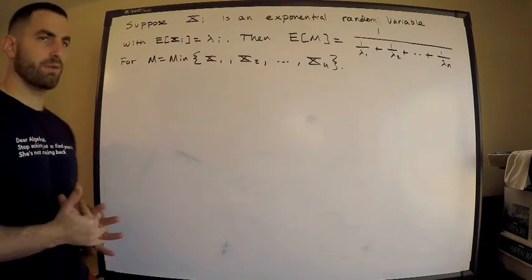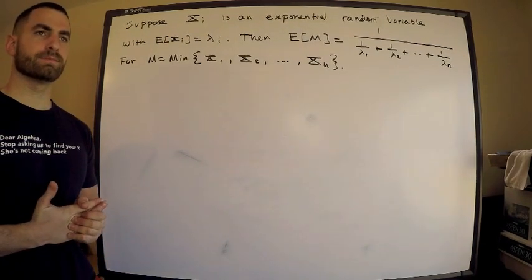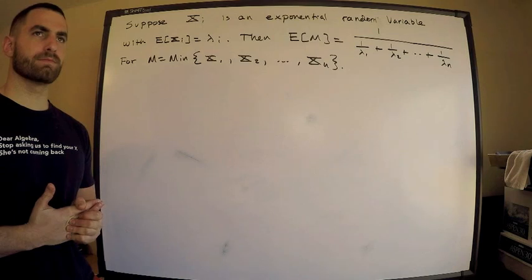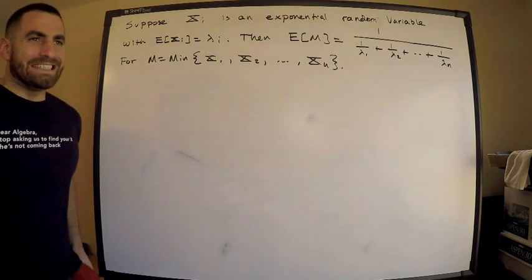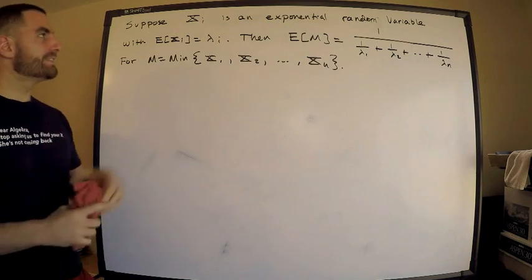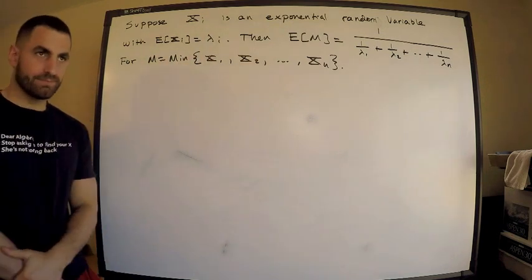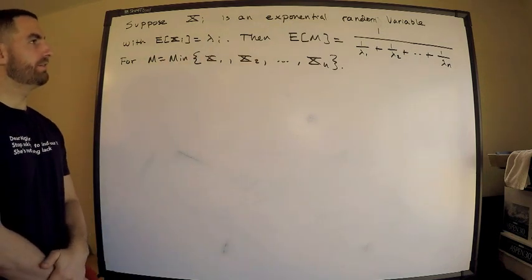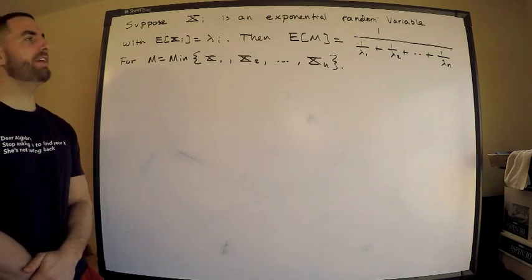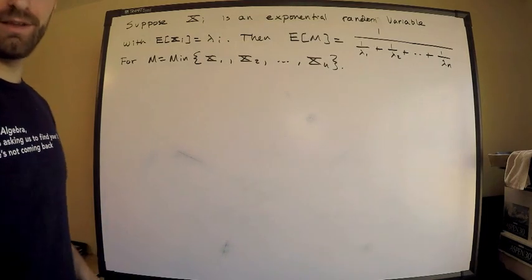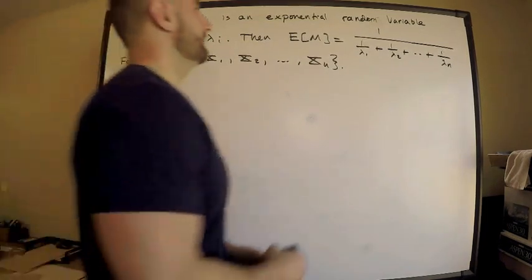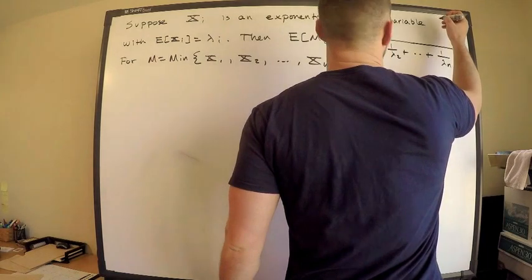Alright, I want to prove this result. So each xi is an exponential random variable, and there's a key part - I need independence. Damn it, I keep forgetting to write independence. We need independence.